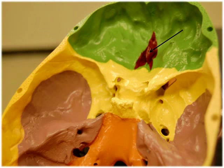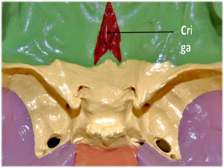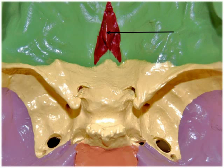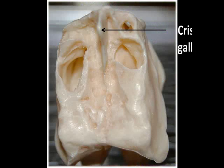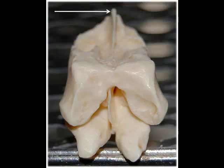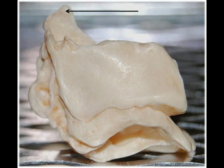Projecting up from the cribriform plate is a superior triangular-shaped process called the crista galli. This serves as the major attachment point for the falx cerebri, which is the membrane that separates the right and left hemispheres of the brain.